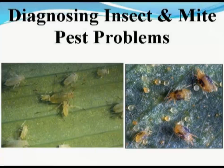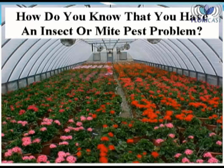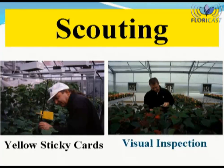Hello there, and welcome to this podcast in which we will discuss diagnosing insect and mite pest problems. First of all, as you look over a crop in the greenhouse, it is important to determine how you know that you have an insect and or mite pest problem. In order to properly diagnose and detect an insect and or mite pest problem, it is recommended to routinely scout your crop or growing area.